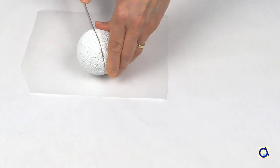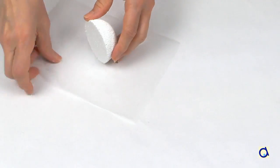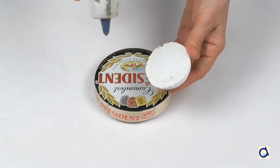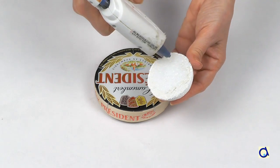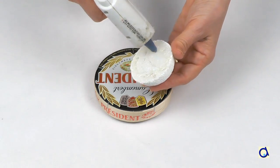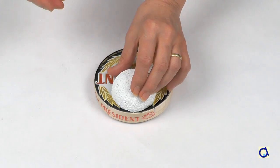Take a styrofoam ball and cut it in two. Glue the half ball against the edge of the Camembert box with the glue gun. The styrofoam ball will form the snout of the beaver.